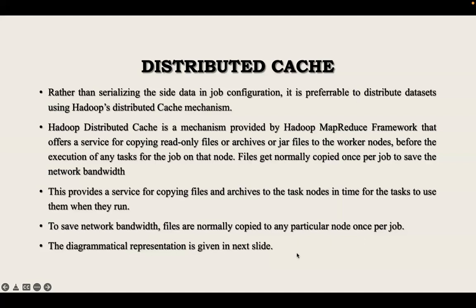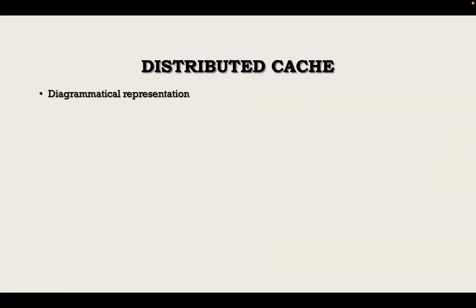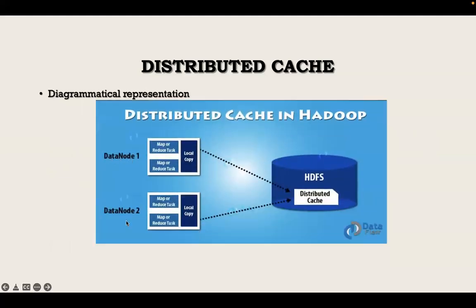The diagrammatic representation of distributed cache is shown in the next slide. We can see data node 1 and data node 2. At data node 1, there is a local copy and a map or reduce task. Similarly, at data node 2, there is a local copy and a MapReduce task. Both copies are being shared to the distributed file system, which is the distributed cache. Once the job is done, the data is sent to this distributed cache.